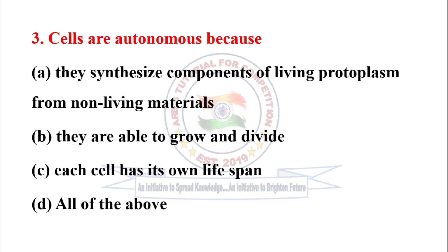Next question: Cells are autonomous because — autonomous means independent. Checking the options: Option A — they synthesize components of living protoplasm from non-living materials — correct. They are able to grow and divide — also correct. Each cell has its own lifespan — correct. So option D is the correct one, that is all of the above.